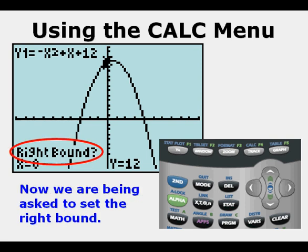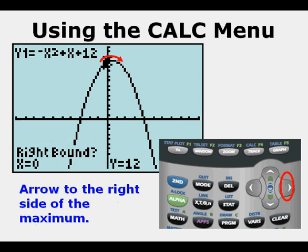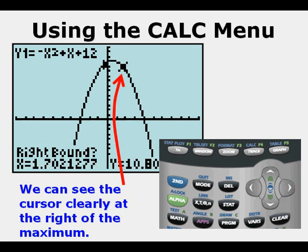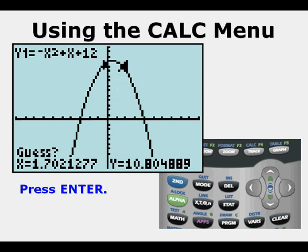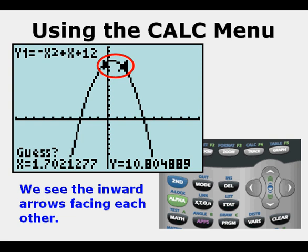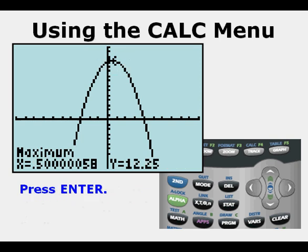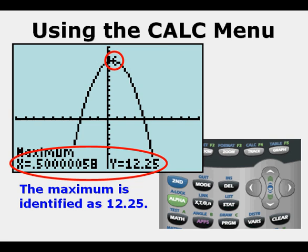Arrow to the right, to the right side of the maximum. We can see here the cursor clearly at the right of the maximum. Press enter. We see the inward arrows again facing each other. Press enter. The maximum is identified at 12.25.